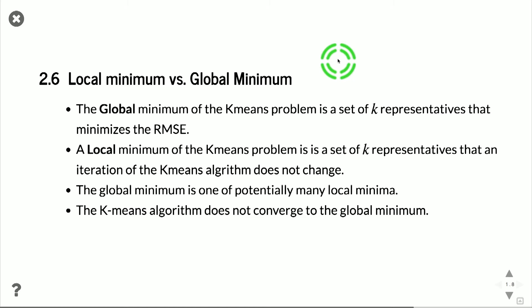However, that does not mean necessarily that what we're getting to is the minimum of the RMSE. That would have been nice, but all we're guaranteed is that we're getting to something that is a local minimum. So k-means does not converge to the global minimum of the RMSE, but it does necessarily converge to a local minimum.